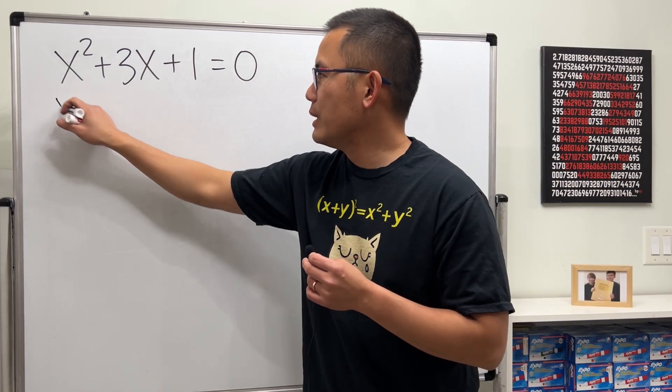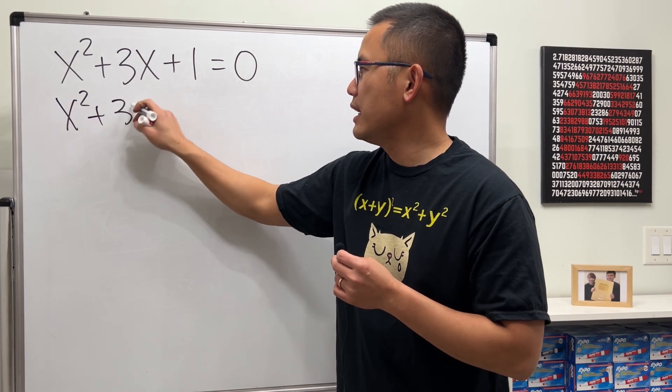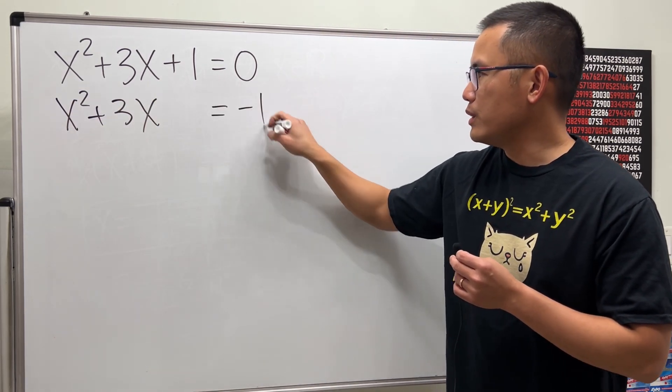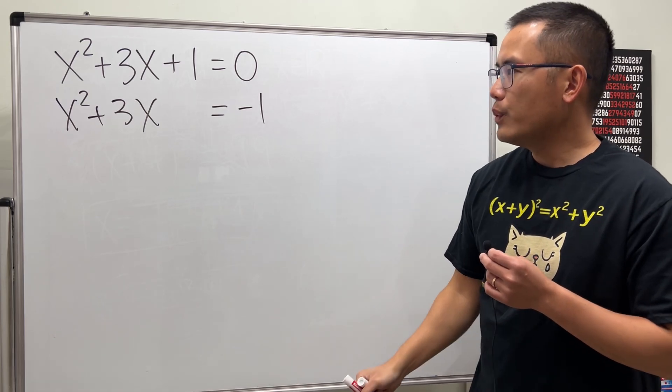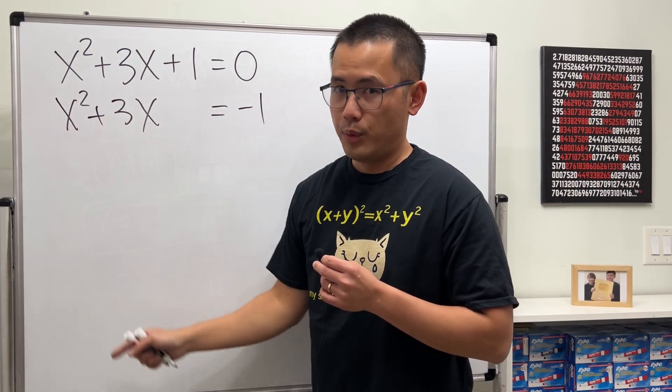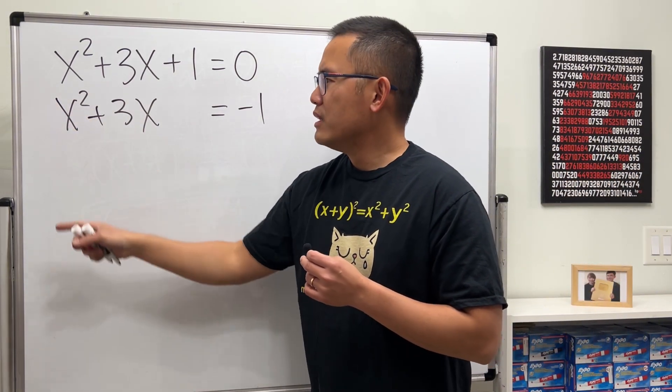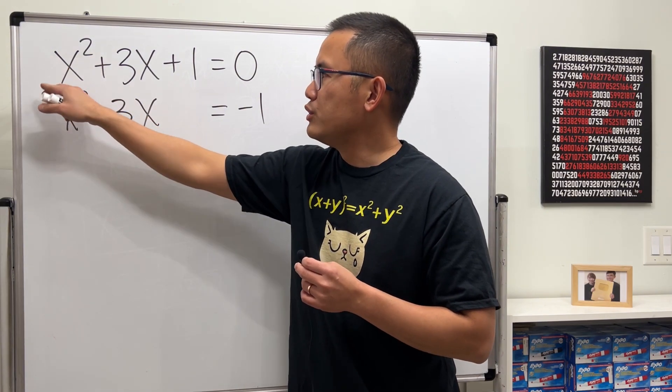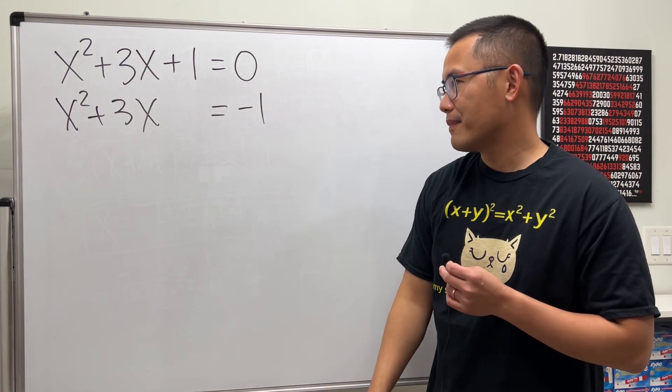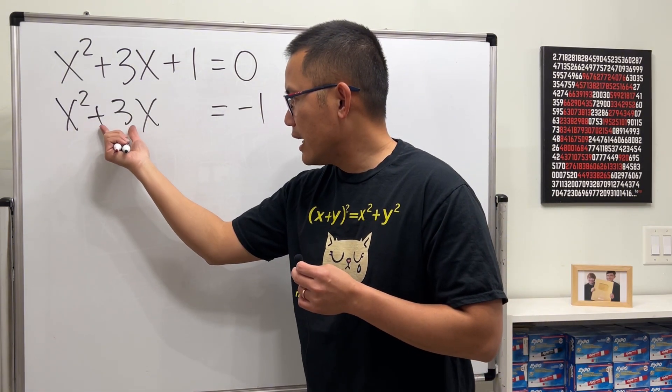Step one: move this to the other side, so we have x² + 3x (leave a space) and we get negative 1. Then make sure we have a 1 before we proceed, which we do. Sometimes if you have, let's say, 2, just divide everybody by 2, then you can still do the same.